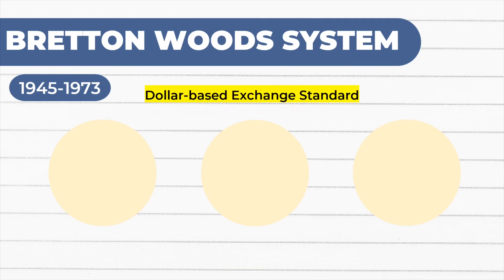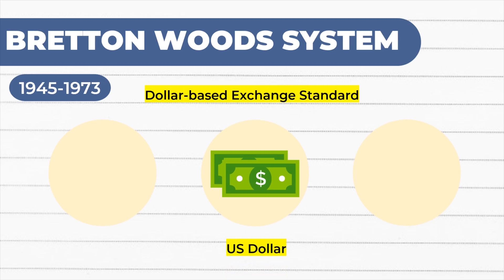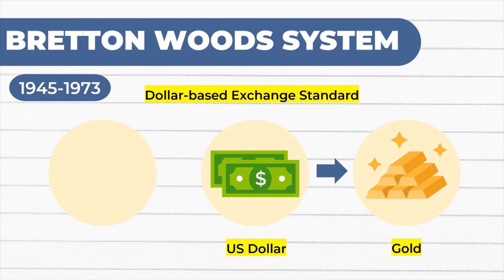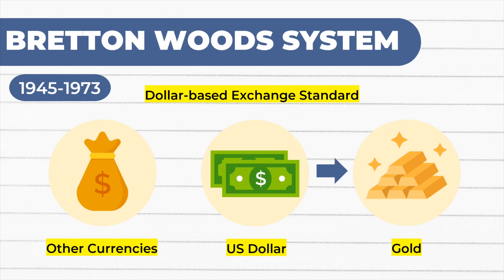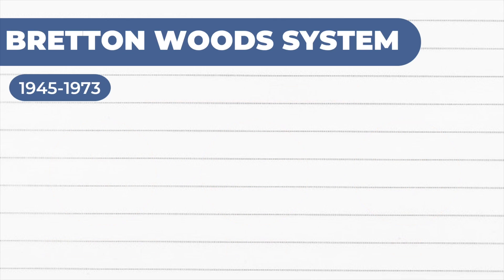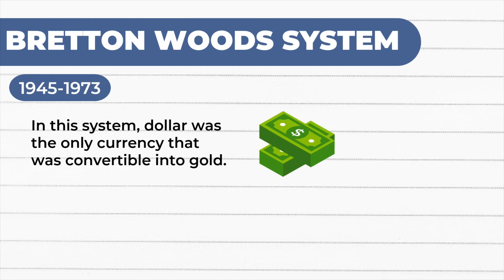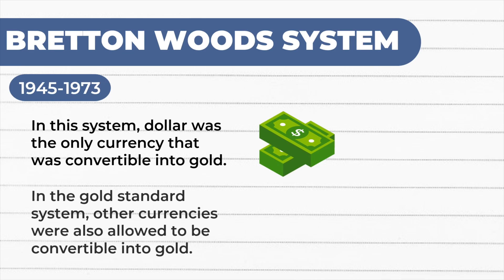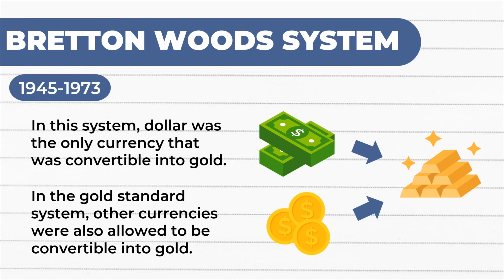The Bretton Woods system was a dollar-based gold exchange standard, where the United States dollar became the key currency. The US dollar was pegged to gold at $35 per ounce, and other currencies were pegged to the US dollar. In Bretton Woods, the dollar was the only currency convertible into gold — unlike the gold standard, where other currencies were also allowed to be convertible into gold.